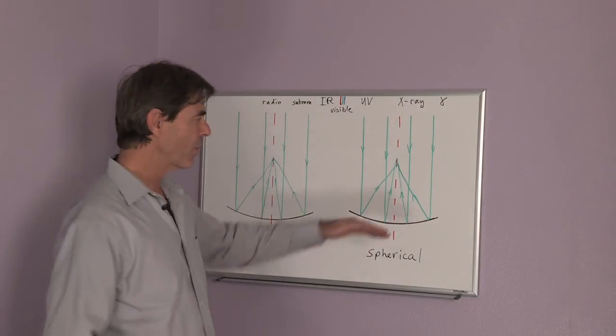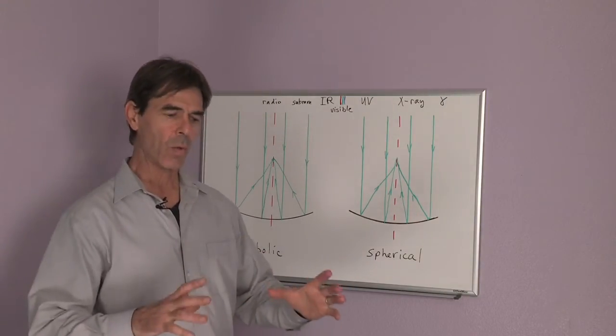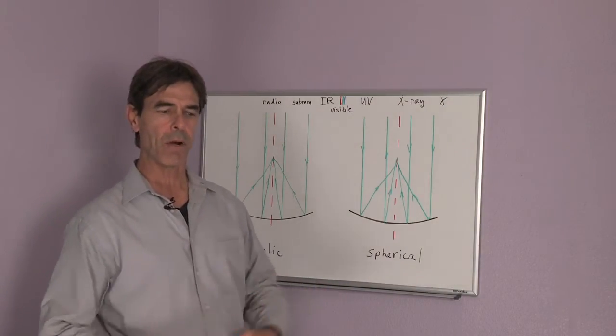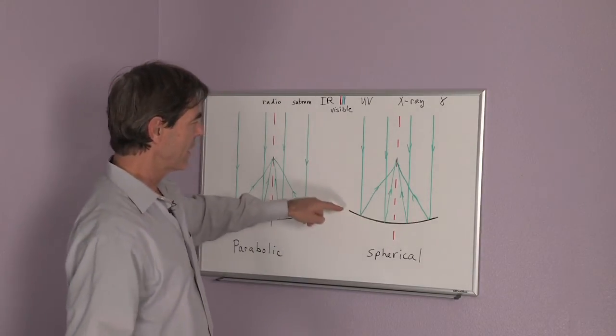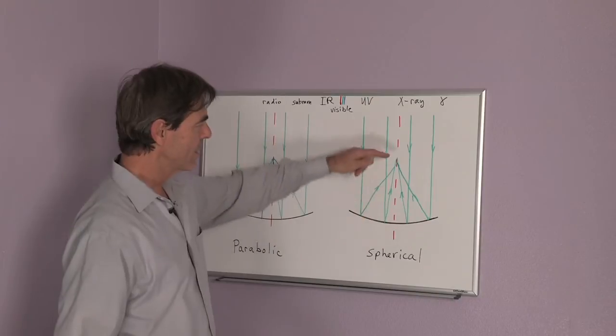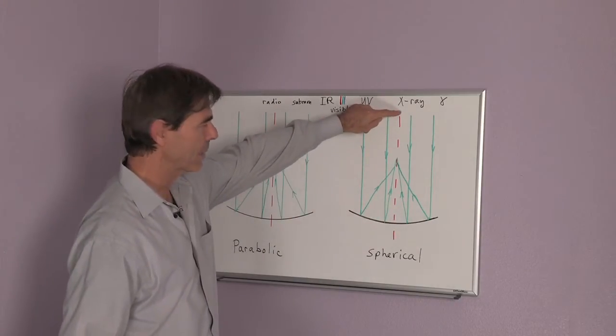The spherical form is as if you had cut a hole in a sphere and taken out part of the sphere, and it'll be curved like this where each part of the mirror is the same distance from a given point.